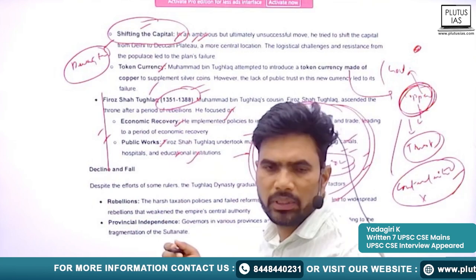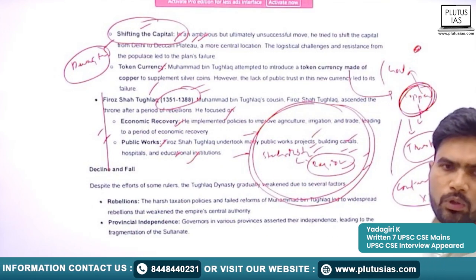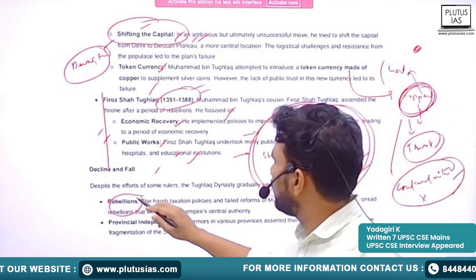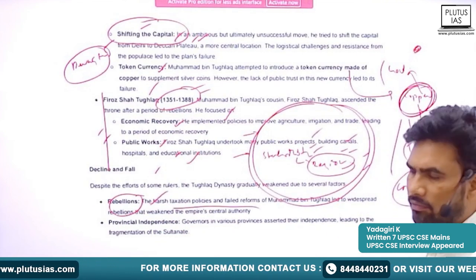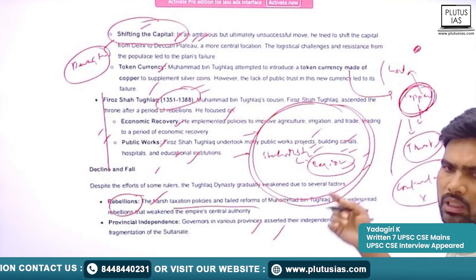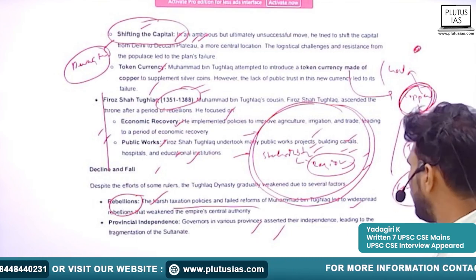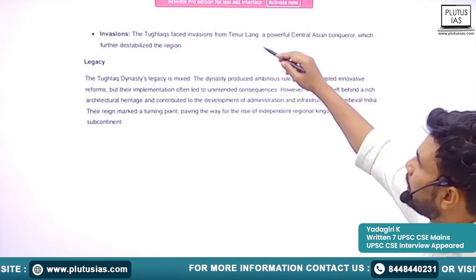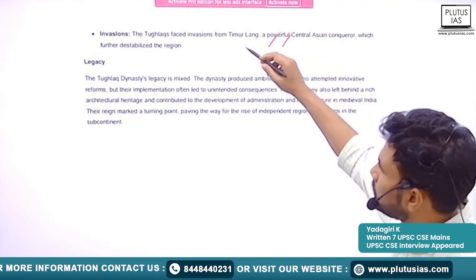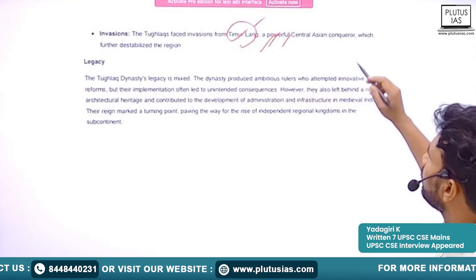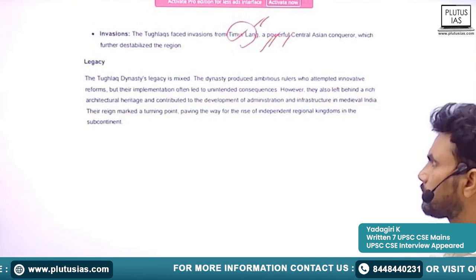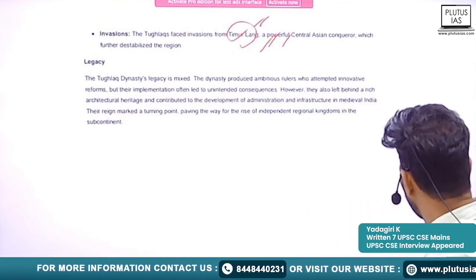For that part of territory, he provided stable rule and we see a brief economic recovery. Feroz Shah Tughlaq undertook many public works — initiating projects like building canals, hospitals, and educational institutions. However, he is not well known for religious tolerance. He was following the recommendations given by ulemas and was a religious follower of Sharia law. He also built a new capital presently known as Feroz Shah Kotla. Harsh taxes and failed reforms of Muhammad bin Tughlaq led to widespread rebellions and many provinces declared independence. The Tughlaqs also faced the invasion of Timur Lang.